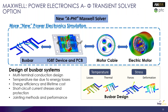A significant new feature in Maxwell is the phi transient solver. This solver is used for bus bar applications, PCB analysis, or IGBT device analysis. It effectively handles multi-terminal conduction designs and supports multi-physics simulations, where EM losses can be transferred to evaluate thermal temperature rise, as well as stress analysis and deformation.